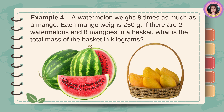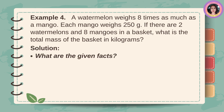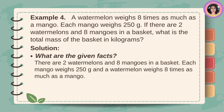Example number four: A watermelon weighs 8 times as much as a mango. Each mango weighs 250 grams. If there are 2 watermelons and 8 mangoes in a basket, what is the total mass of the basket in kilograms? Given facts: There are 2 watermelons and 8 mangoes in a basket. Each mango weighs 250 grams and the watermelon weighs 8 times as much as a mango.